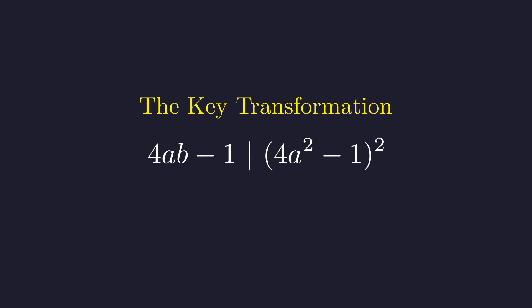This is our starting point. The vertical bar denotes divisibility. First, an important observation: The greatest common divisor of our two terms, 4 times A times B minus 1 and B, is 1. We can see this because 4 times A times B minus 1 is congruent to negative 1 modulo B. This confirms they are coprime and prepares us for the modular reasoning to follow.